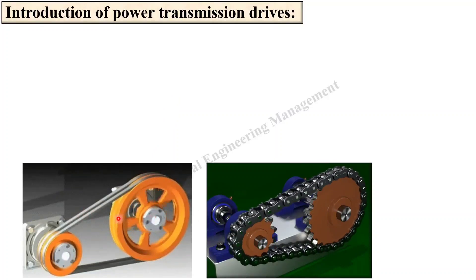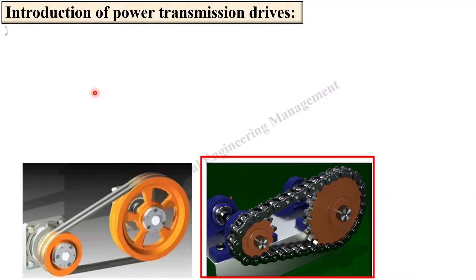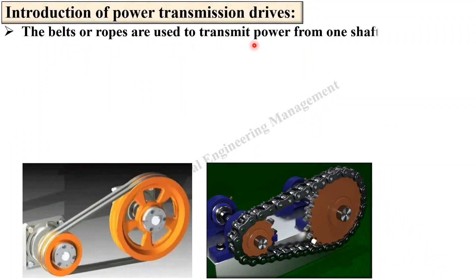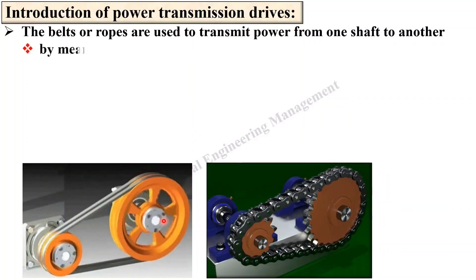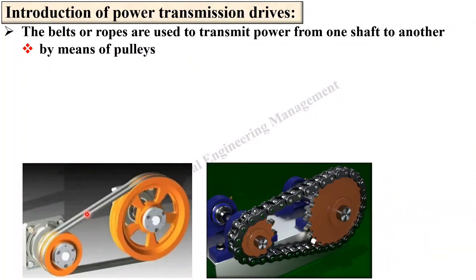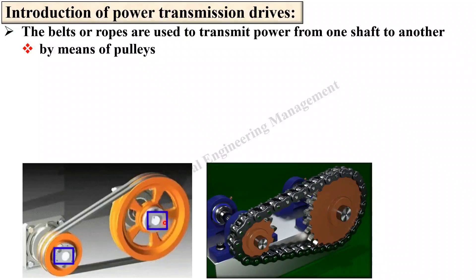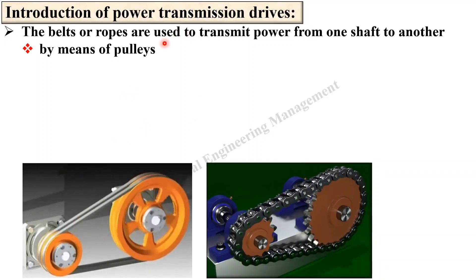Here you can see these are the different types of power transmission drives — this is the belt drive and this one is the chain drive. Belts or ropes are used to transmit power from one shaft to another shaft. Here you can see the belt; belts are used to generally transmit power from one shaft to another shaft by means of pulleys.